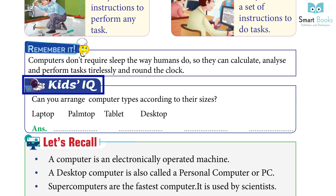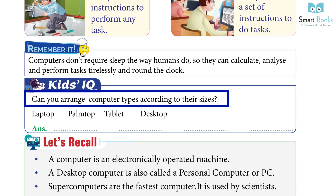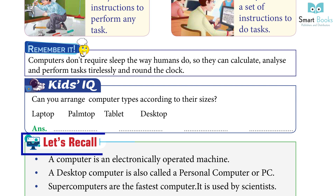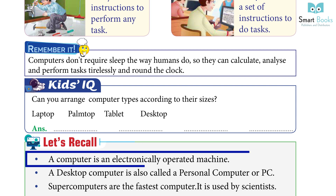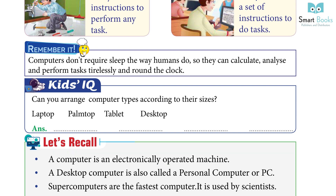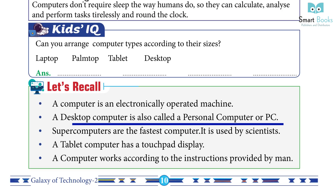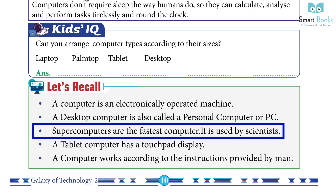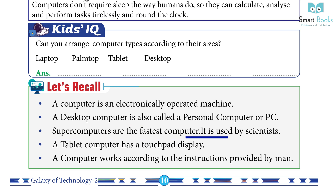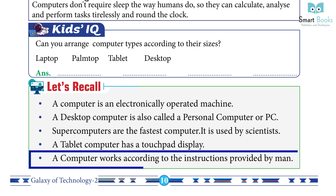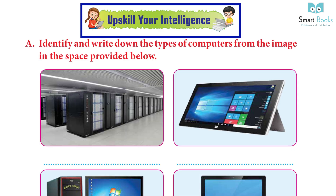Can you arrange computer types according to their sizes? Laptop, palmtop, tablet, desktop. Let's recall: a computer is an electronically operated machine. A desktop computer is also called a personal computer or PC. Supercomputers are the fastest computers and are used by scientists. A tablet computer has a touchpad display. A computer works according to the instructions provided by man.